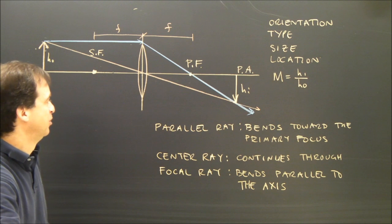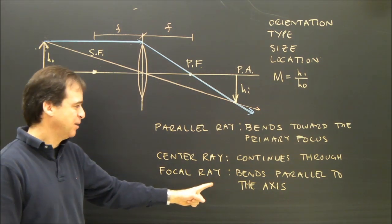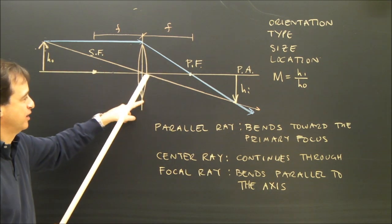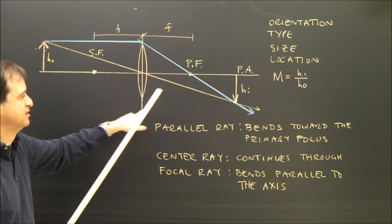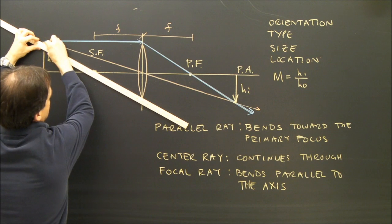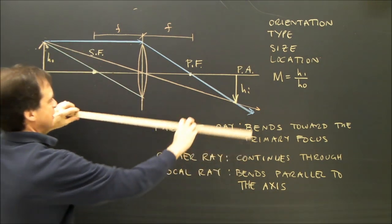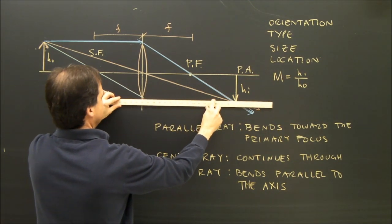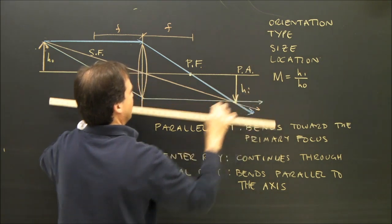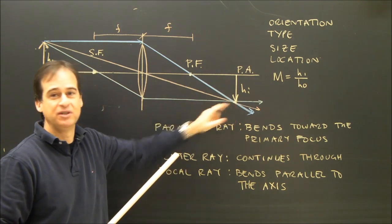The third ray I'm going to use, the third ray is called the focal ray. It bends parallel to the axis. So a focal ray goes through the focus, the secondary focus. When it hits the lens, it's going to go parallel. So I draw a focal ray. It goes through the secondary focus, and then it becomes parallel. And it should go through the same point. So I'm going to cheat a little bit. And there we go. So the focal ray becomes parallel and meets right there.